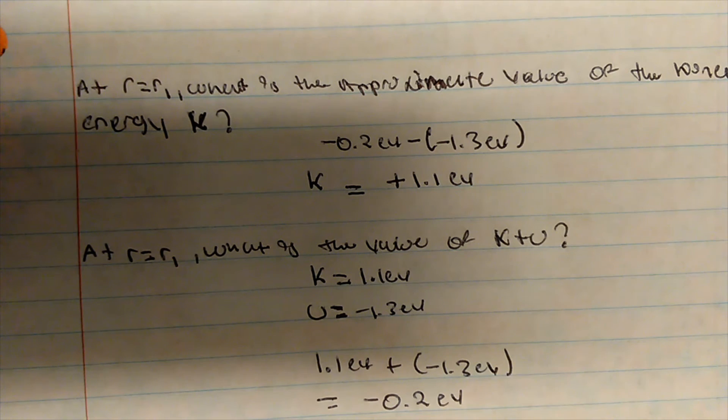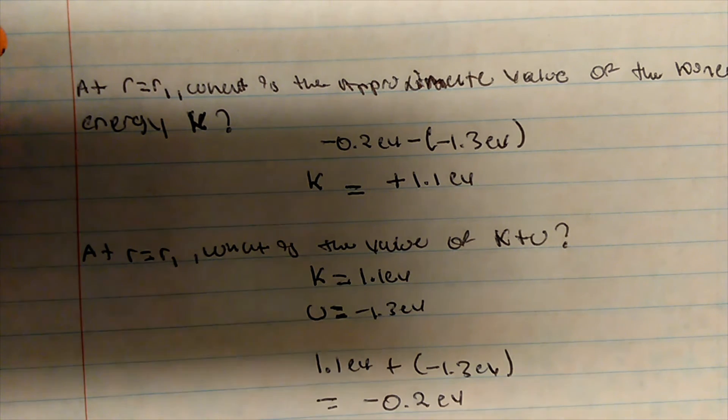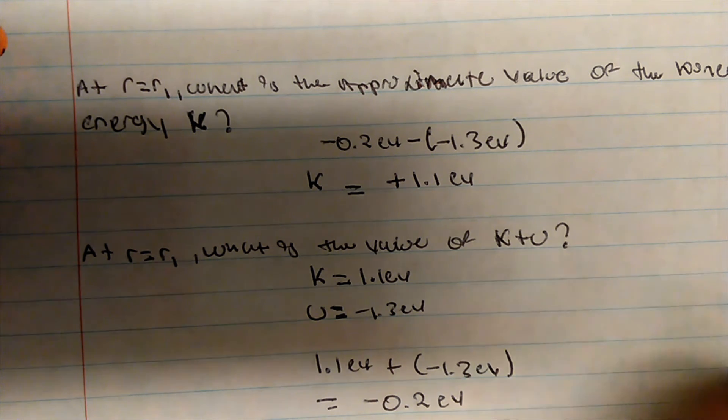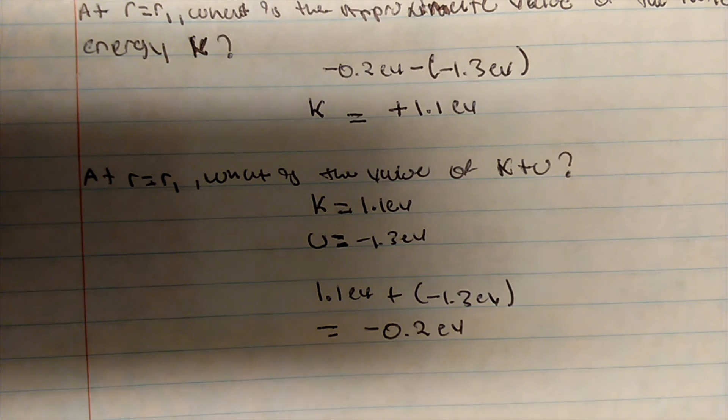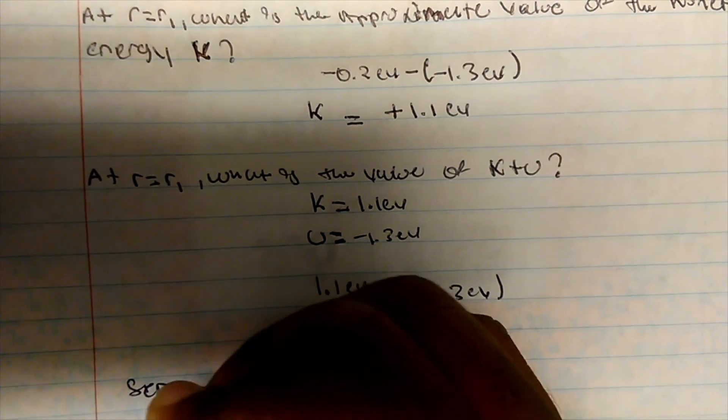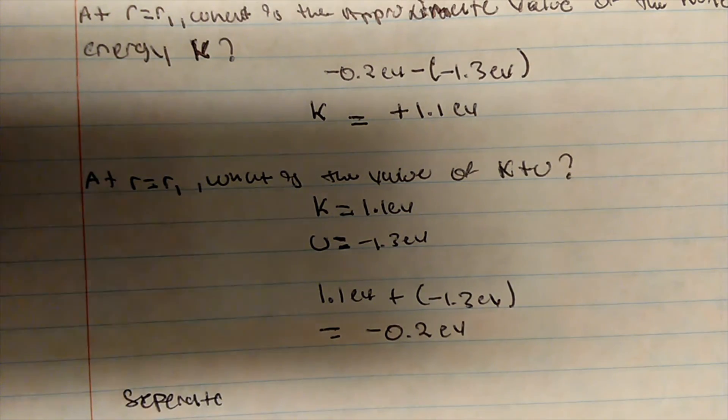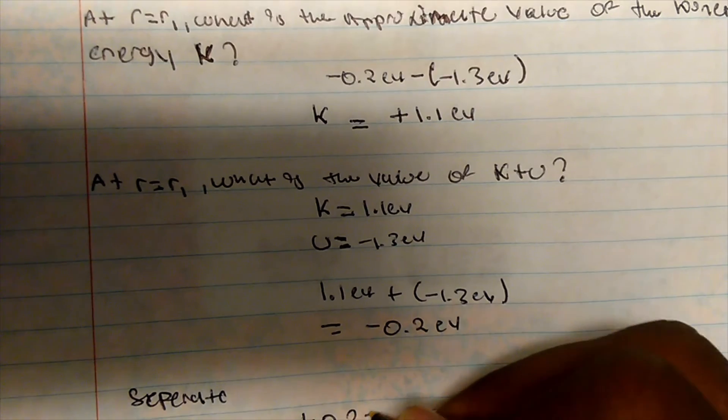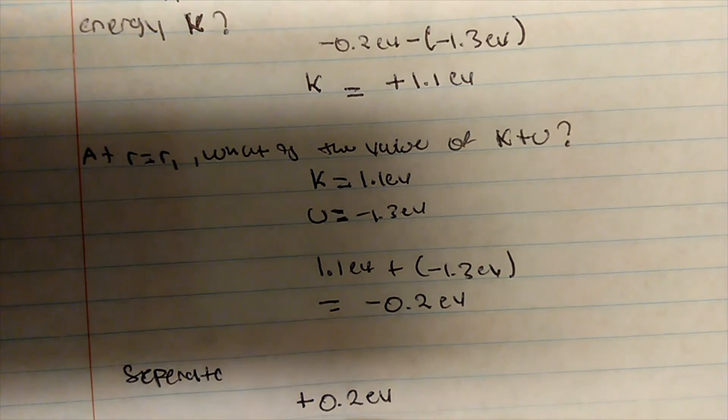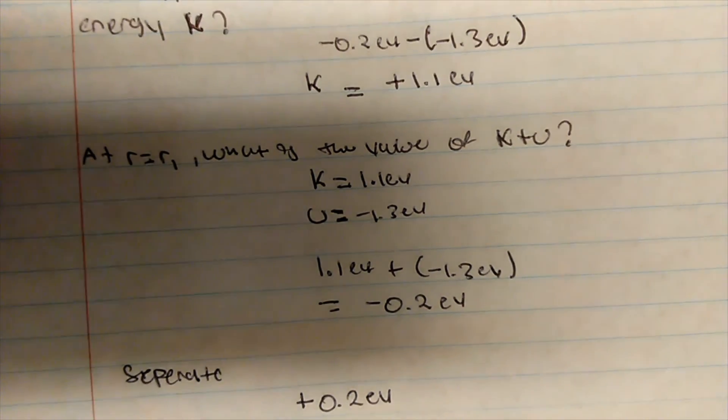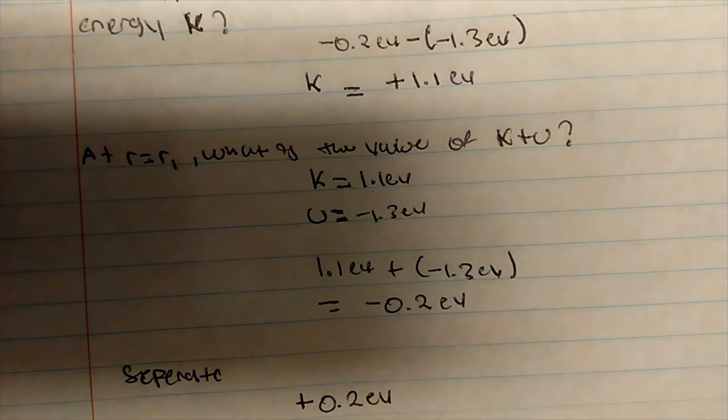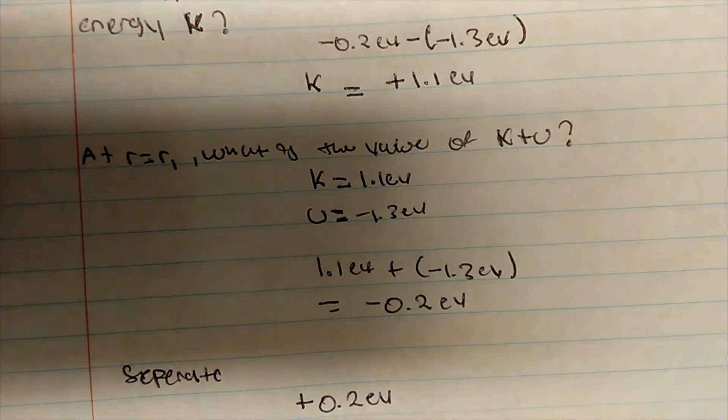Another interesting question: what is the minimum energy a photon must have so that the absorbed photon will cause the two atoms in this state to separate? The energy that will cause separation is always the positive value of your K plus U. It has to be opposite—we have to break the K plus U line in order to bring these two atoms apart.